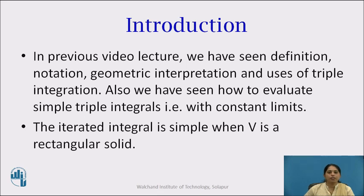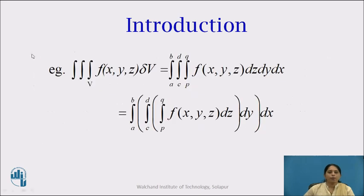The iterated integral is simple when capital V is a rectangular solid. For example, triple integration over V of f(x, y, z) dV equals integration from A to B, integration from C to D, integration from P to Q, f(x, y, z) dz dy dx, where A, B, C, D, P, Q are constants.